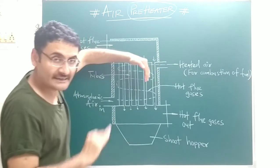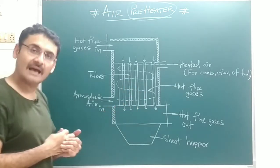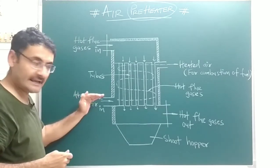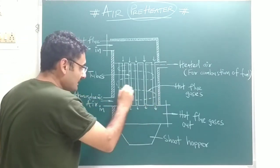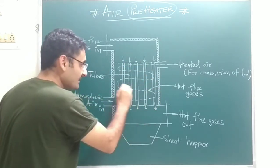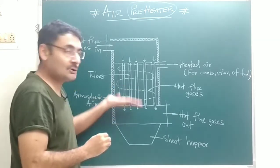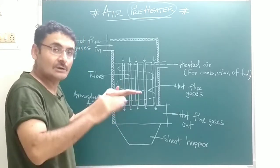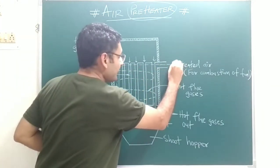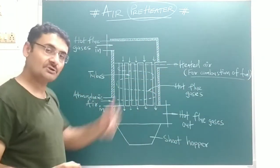These pipes become heated. Inside the air preheater, heated pipes are present whose temperature is high. From the bottom side of the air preheater, atmospheric air is taken and passed over the heated tubes. The heated tubes reject their heat to the atmospheric air, so that air becomes hot. Since hot air has low density, it moves upward and we take the heated air from the outlet. That heated air is then supplied for the combustion of the fuel.